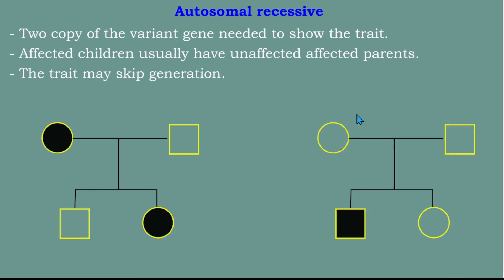Next is autosomal recessive, which also takes place on the autosomes. The key characteristic of autosomal recessive: two copies of the variant gene are needed to show the trait. Affected children usually have unaffected parents, and the trait may skip generations. Using the same allele notation, capital B is dominant and small b is recessive — two recessive alleles (bb) are needed for the trait to be shown.